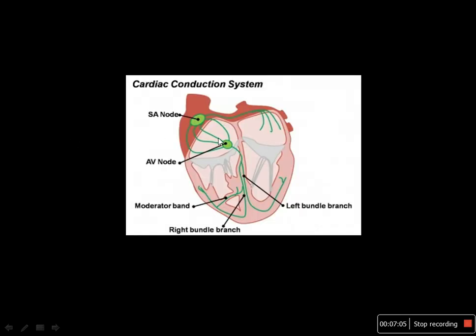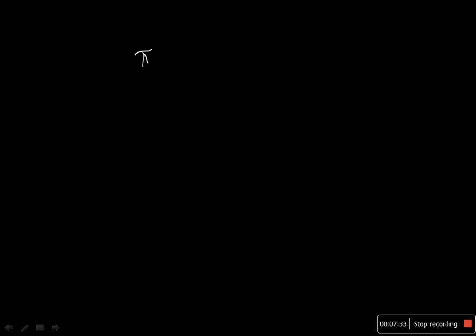Next is the development of the cardiac conduction system. These are specialized myocardial cells which have achieved specific permeability for calcium and sodium channels. This includes the SA node, AV node, bundle branches, and the moderator band. Here we end the development of cardiac embryology. Thank you.